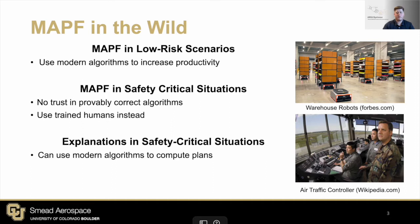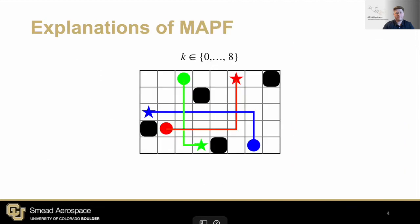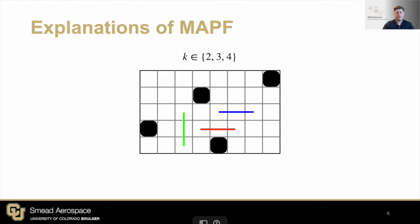For instance, we could use algorithms to compute the correct plans, use the explanation to allow the trained human to validate the plan, and then allow the human to make the final decision to execute the plan. To this end, our previous work introduced an explanation scheme for MAPF. Our method is based on decomposing the path into segments where paths don't intersect. Since humans can identify intersecting lines or lack thereof very early in the cognitive process, a human can quickly validate the plan.